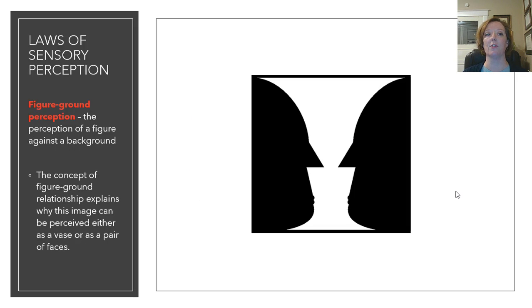The next Gestalt Law is figure-ground perception, and this is the perception of a figure against a background. So, you can see one of two things in this picture. You can either see something like a goblet if you are focusing on the white portion of the picture, or some type of cup or vase. If you are focusing more on the outside of the figure, the background, the black part of the picture, you might see two figures. I've heard that they look like batmen looking at each other. The concept of figure-ground relationship explains why this image can either be perceived as a vase or a goblet or a pair of faces.